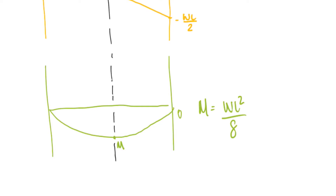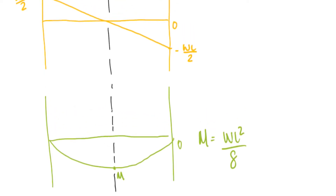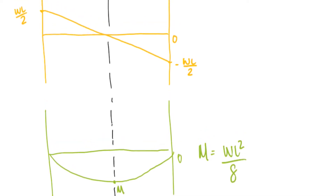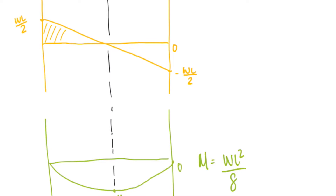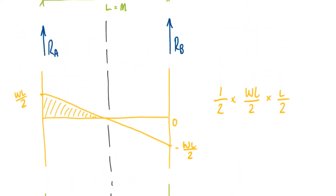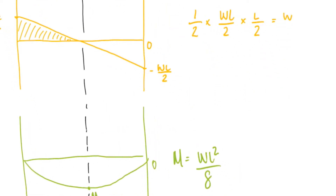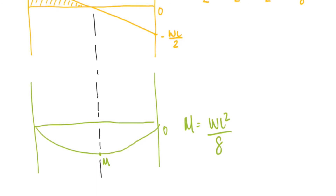That is just something you can remember, or you can make use of the shear force diagram. The area under the shear force diagram is equal to the moment at that point. So in this case we will have a half — because it's a triangle — times WL over 2 for the force, times L over 2 for the length, which in total gives us WL squared over 8.